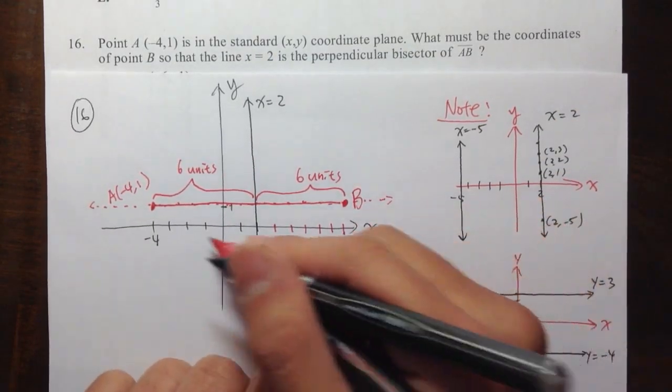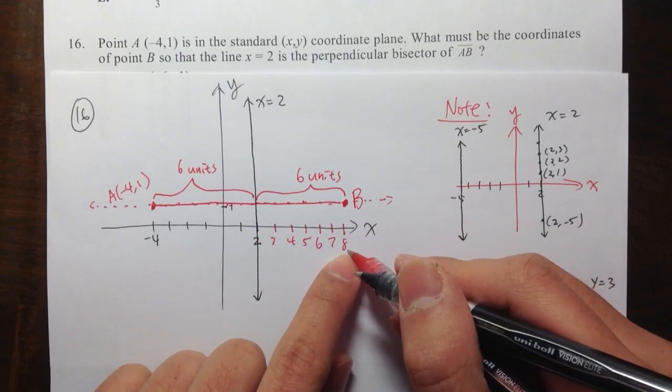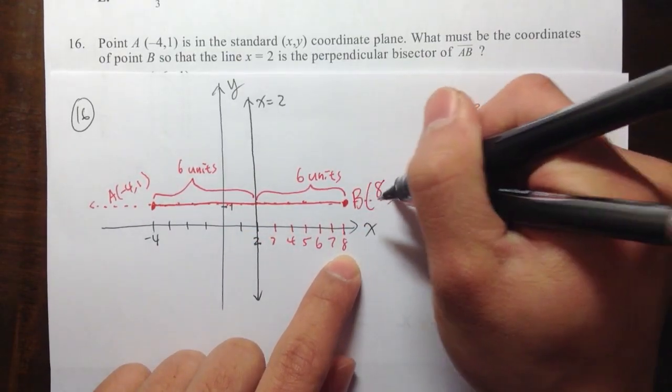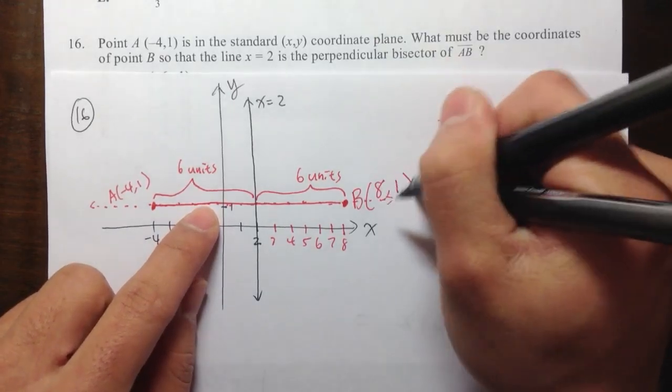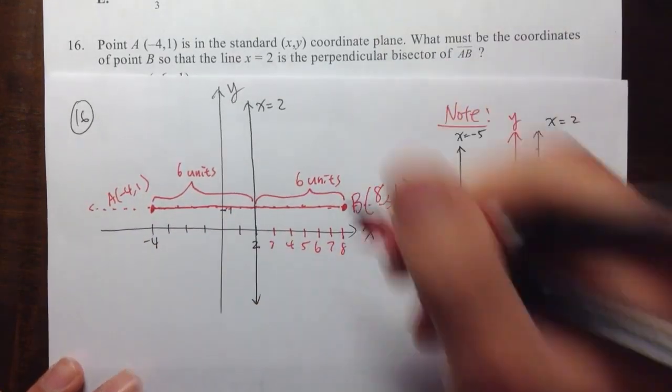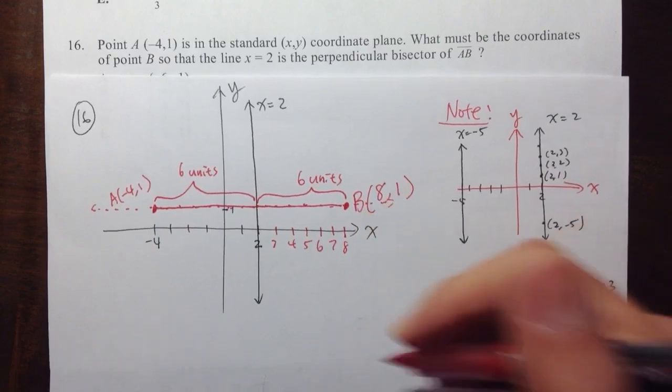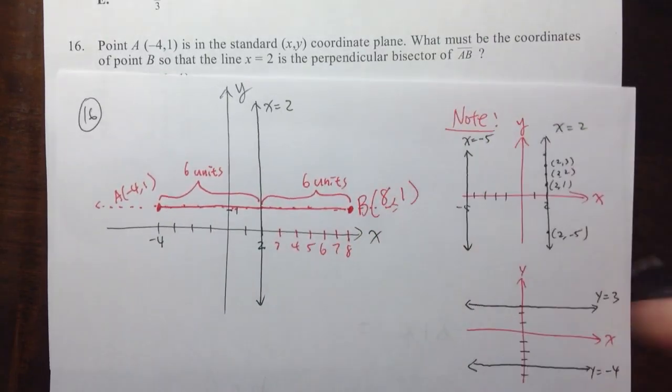Point B. And the coordinate for point B is, as we can see, the x value is eight, comma, the y value is also equal to one. Eight comma one. So point B right here is eight comma one. So let me, yeah, eight comma one. I think you guys can see this.